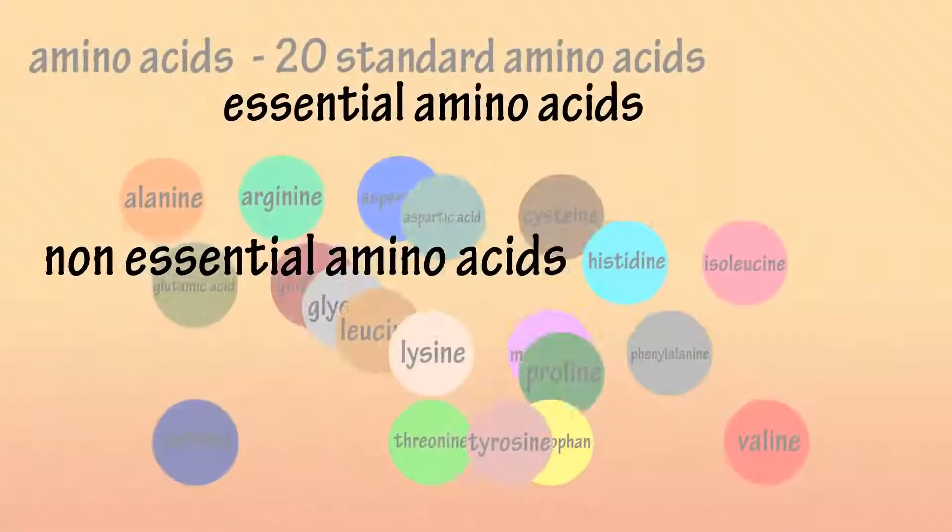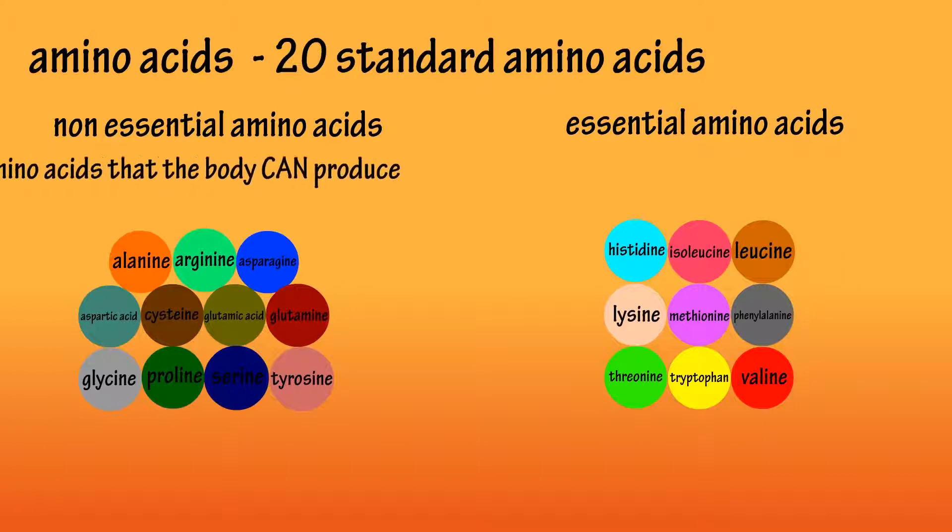Non-essential amino acids are amino acids that our bodies can produce even if we don't get them from food we eat. There are 11 non-essential amino acids.